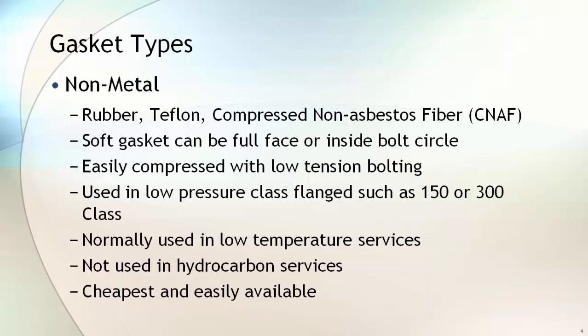Starting with non-metallic gaskets, the most common materials used are rubber, Teflon, PTFE, and compressed non-asbestos fibre. These are also known as soft gaskets. They can be full face or inside bolt circle, and can be easily compressed with low-tension bolting. This type is used in low pressure class flanges such as 150 or 300 class. They cannot be used in high temperature or hydrocarbon services. Non-metallic gaskets are the cheapest and most easily available.